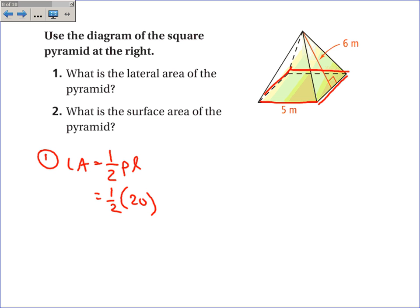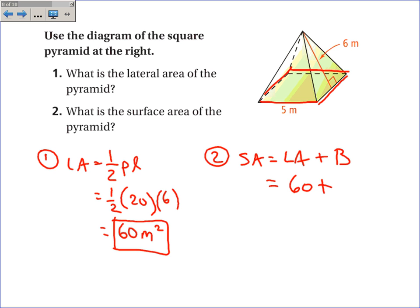The slant height, L, is 6. And so 60 meters squared is the lateral area. The surface area is the lateral area plus one base. So it's 60 plus the area of the base is 5 times 5 or 25. And I get 85 meters squared.